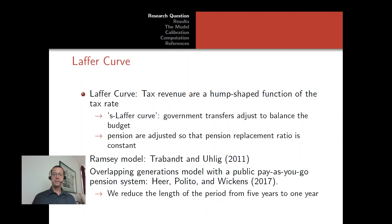In our general equilibrium model, if labor income taxes increase, households reduce labor supply and income declines, which reduces savings. Typically in these models, labor supply declines more than savings, so the capital-labor ratio goes up and the wage rate per efficiency unit rises. If we keep the pension replacement ratio constant, pensions go up, and we must adjust the Social Security contribution rate.